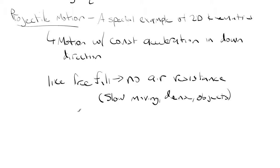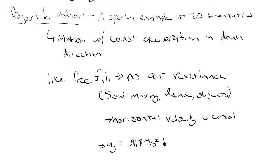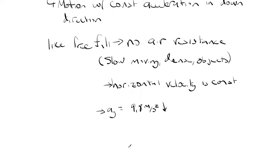Another similarity between projectile motion and free fall is that the horizontal component of the velocity is constant. In free fall it was constant at zero, but now it's constant at some other value. The vertical velocity is always changing, and in the vertical we have an acceleration — a_y — which is 9.8 meters per second squared, always pointing down.